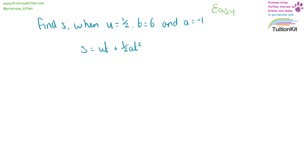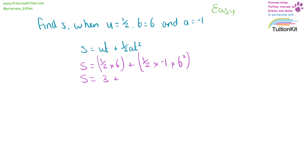Find s when u equals a half, t equals six, and a equals minus one. s equals a half times six, which is t, plus a half times a, which is minus one, times t squared, which is six squared. s equals a half times six, which is three, plus a half times minus one times six squared, which is 36. So s equals three plus a half times minus one times 36, which gives us minus 18. Three plus minus 18 equals minus 15.